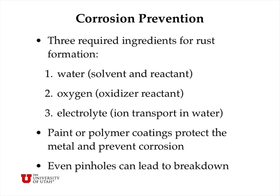There are three required ingredients for the formation of rust. First, water — which is both a solvent for the aqueous ions (hydroxide and iron 2+ ions) and also a reactant in the reaction that forms hydroxide ions. Second, oxygen, which is the main oxidizer in the cathodic region of the metal. And third, we need electrolytes, so you need to have ion transport in water.